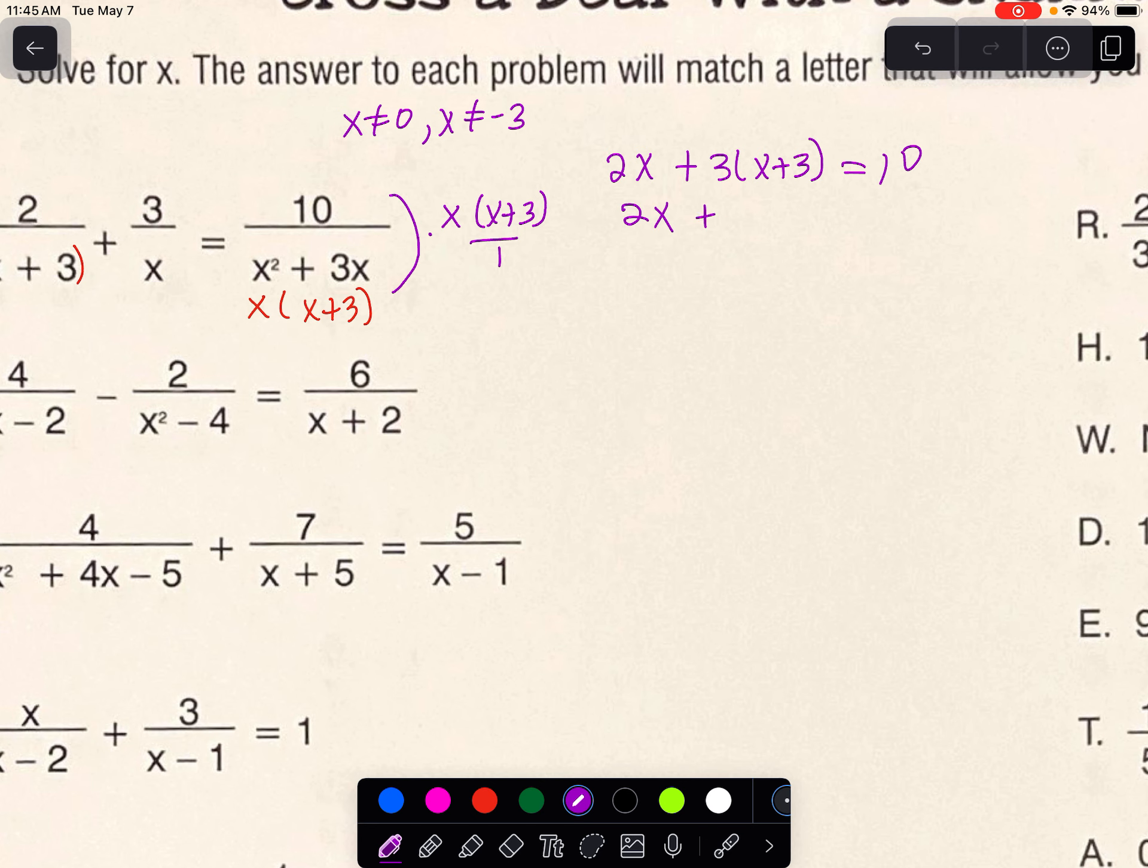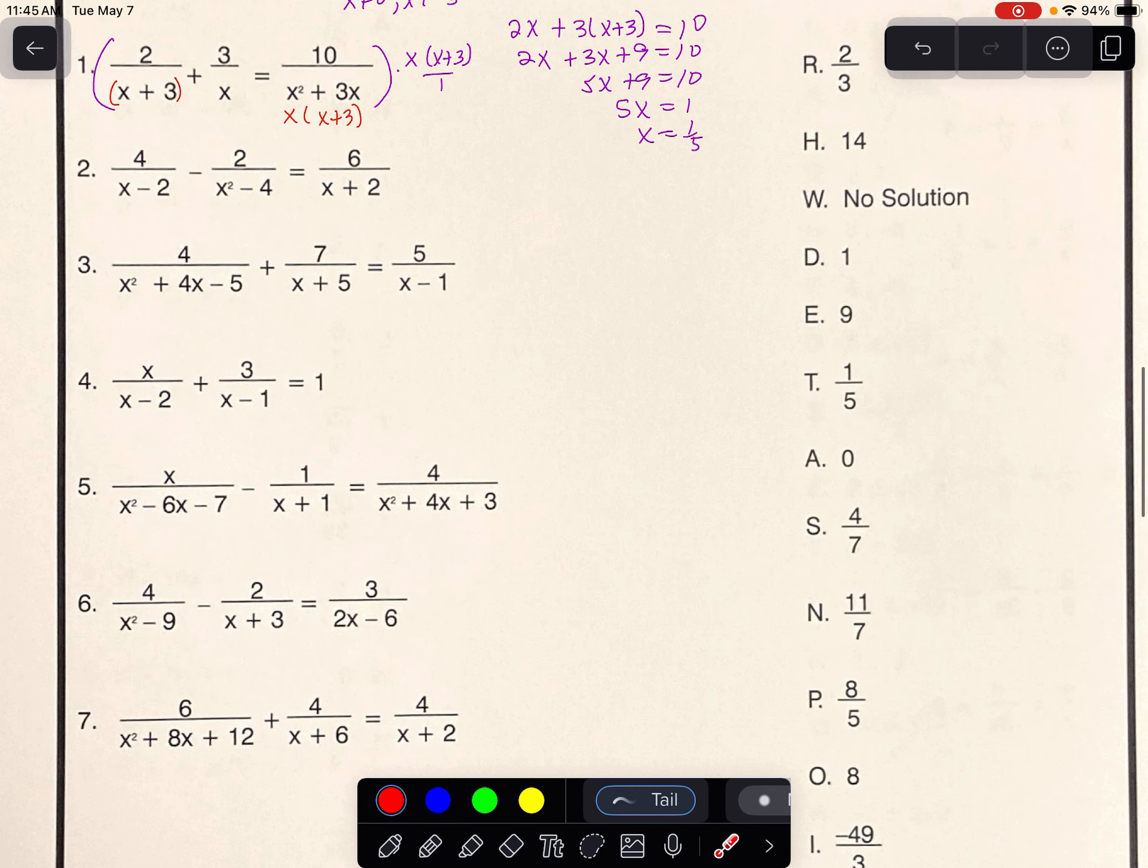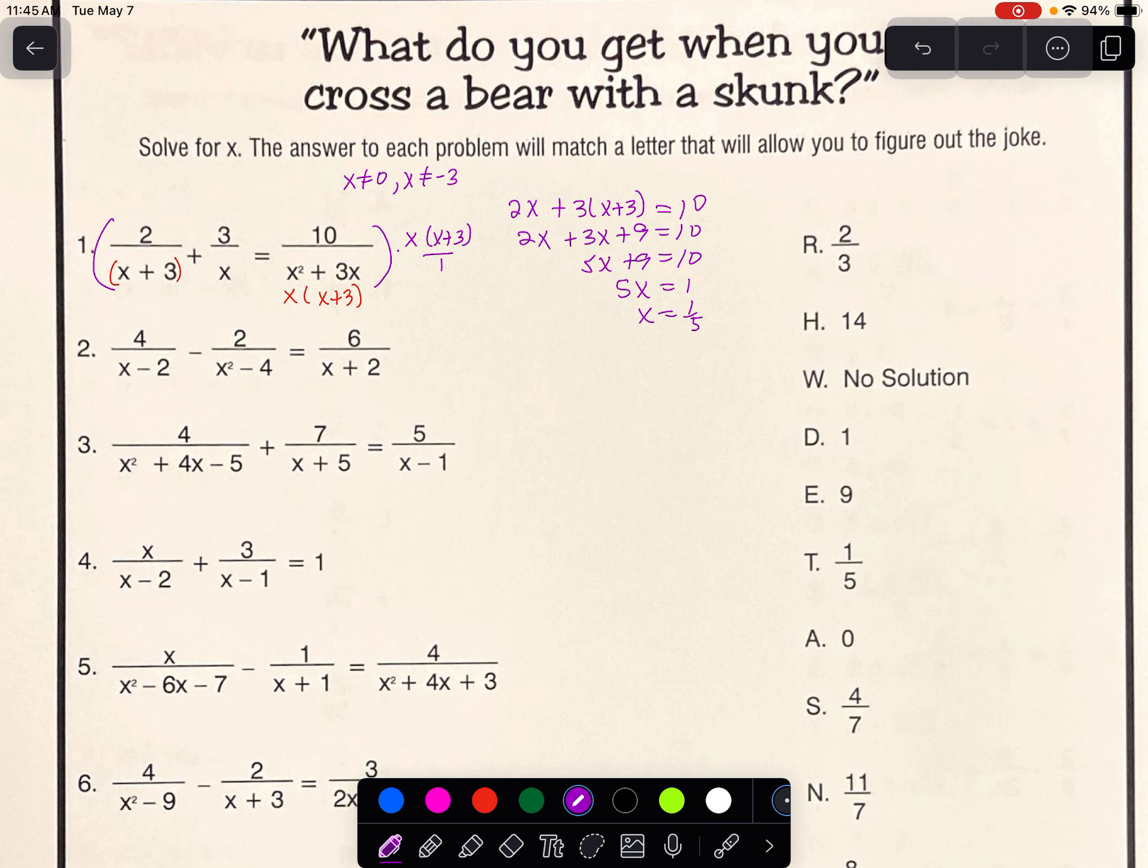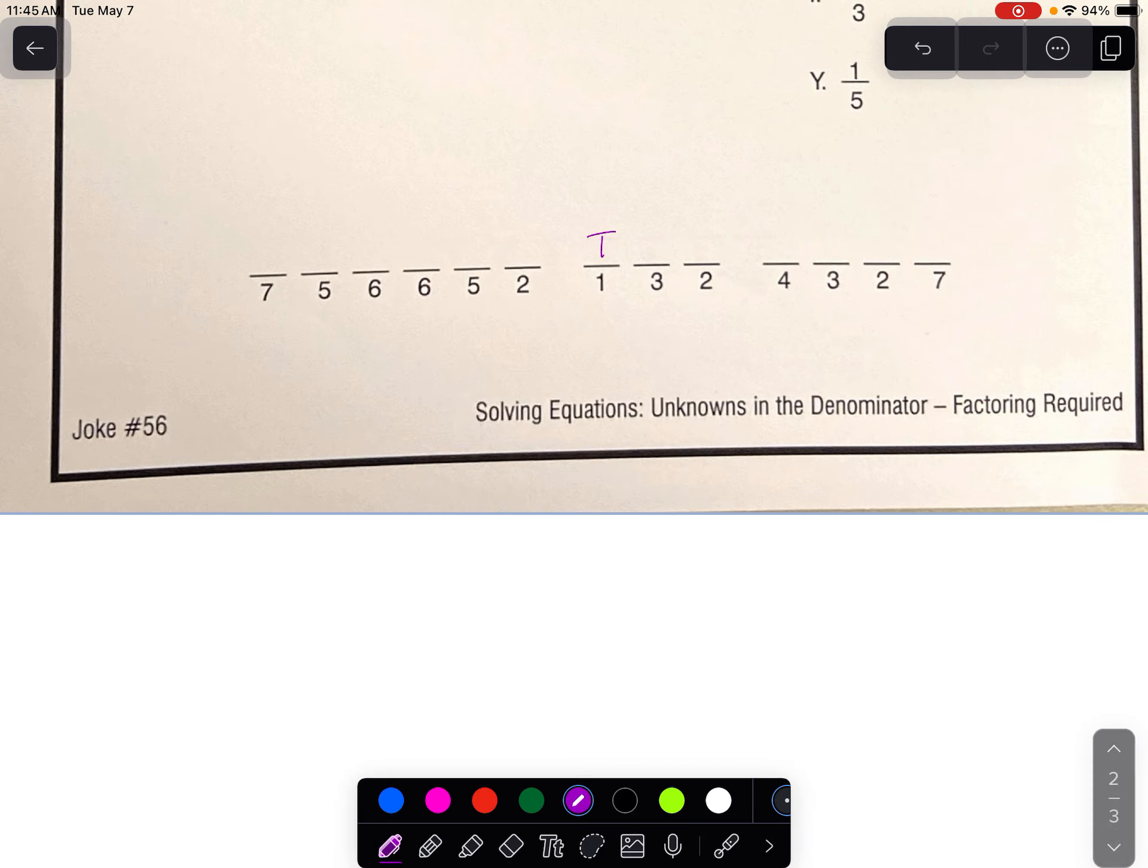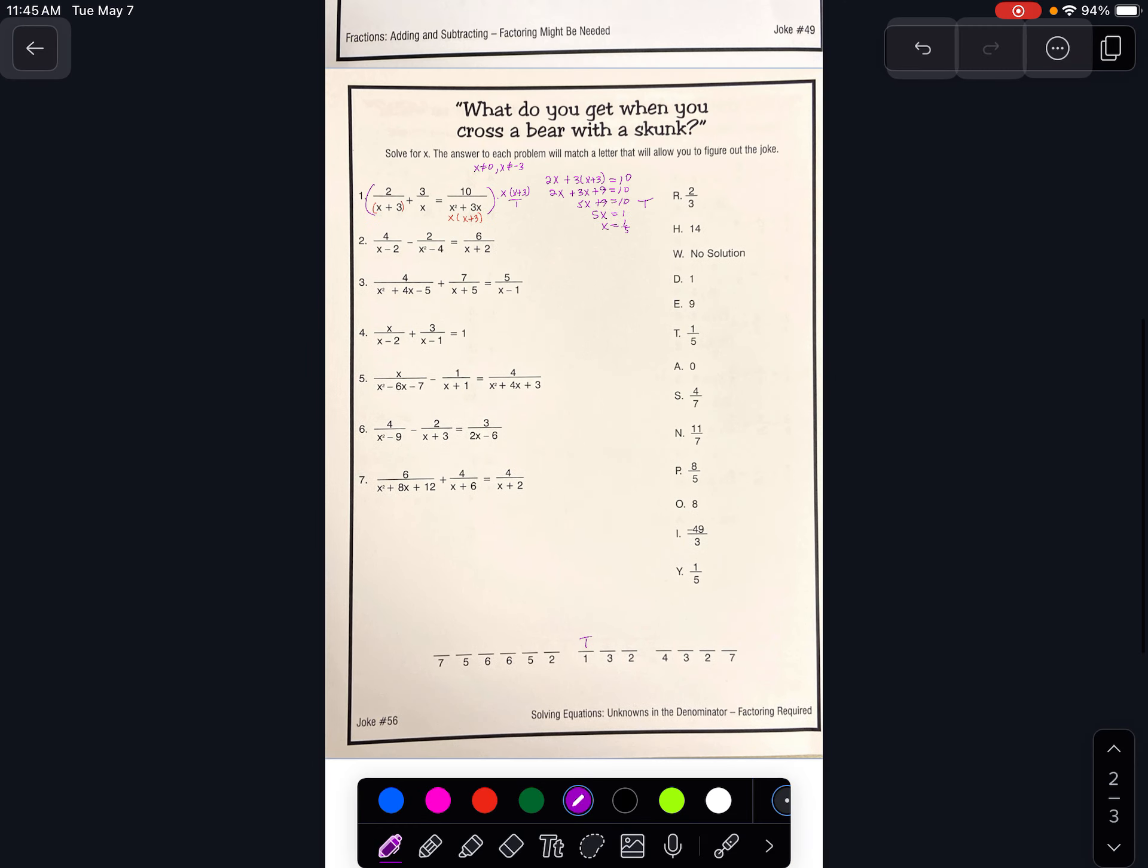And now it's just a simple equation. How would you solve this equation? Distribute, add like terms, get your variables to one side, your simple numbers to the other. And we get 1 fifth. Now that's not from our excluded value list. So if you look down, that is T. So where we see number 1, put a T. And that's how you do those.